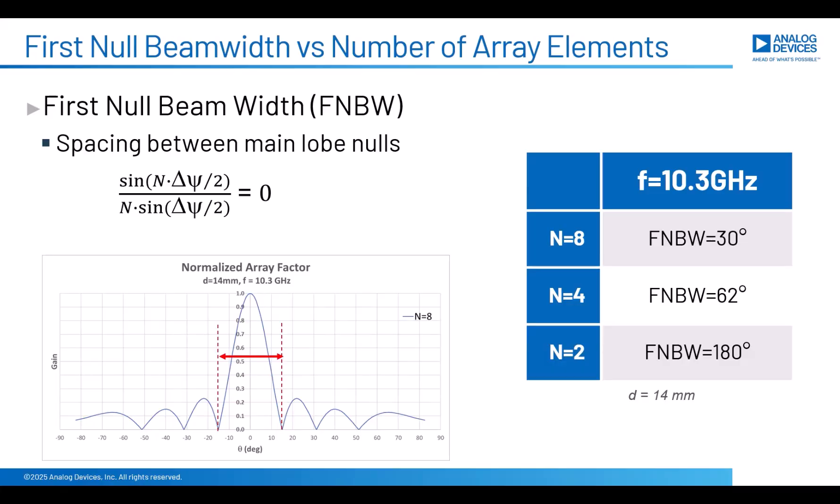Another thing that we can use the array factor equation for is to look at the null-to-null spacing of the main lobe. This is just another way to measure that main lobe beam width. And it's a little bit easier because the nulls are very pronounced. So measuring the first null beam width is sometimes easier to do than trying to measure the half power beam width. And of course, a null is 0. So we just solved the array factor equation for a phase shift that gives us a 0.